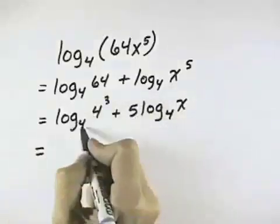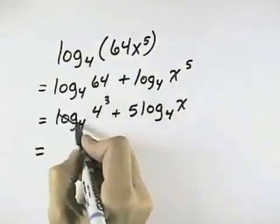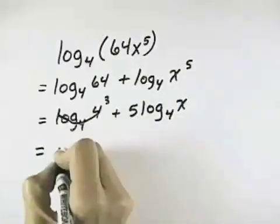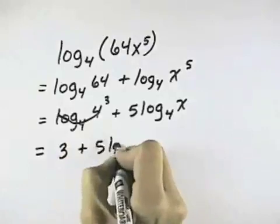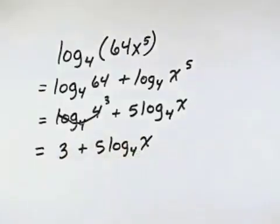Now we know that log base 4 and the base of our exponents 4 cancels each other out, as inverse operations, and leaves the 3 from the exponent. And then we have the 5 times log base 4 of x, which cannot be broken down any further.